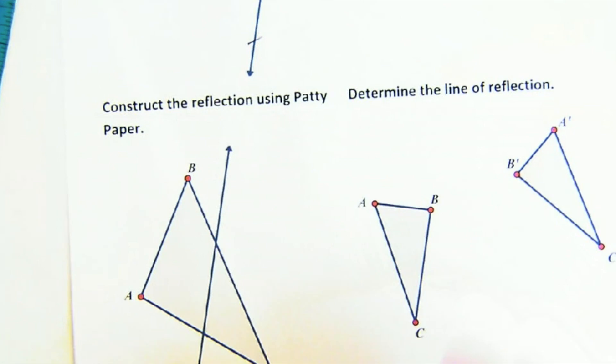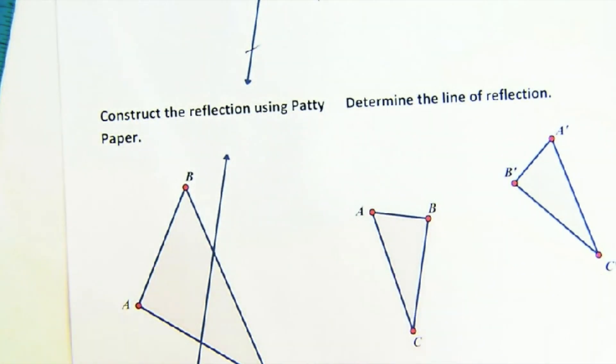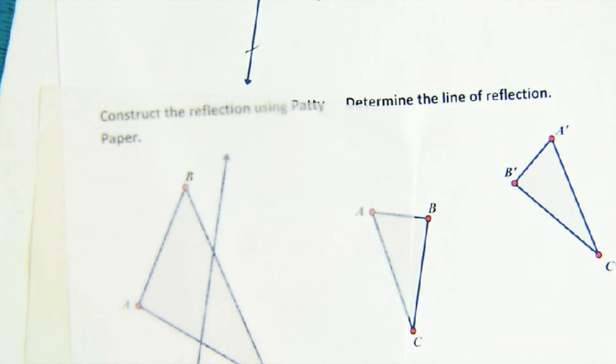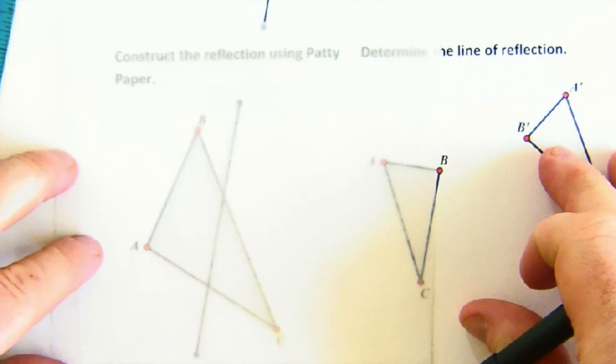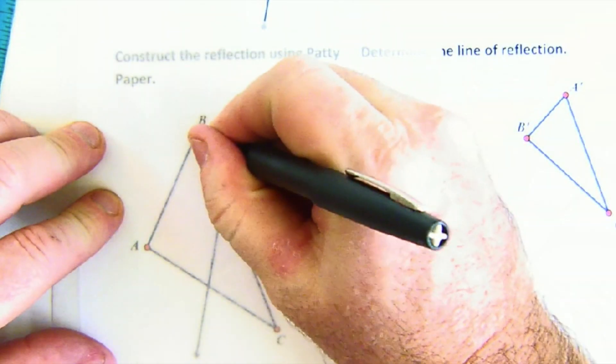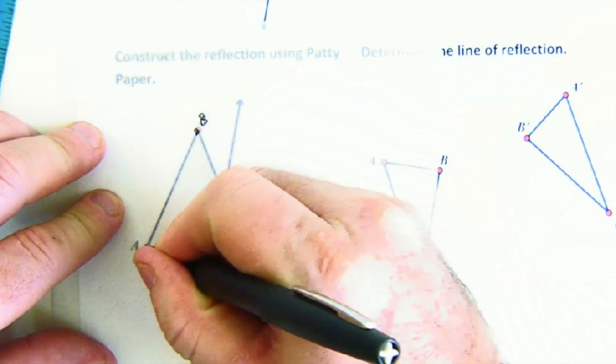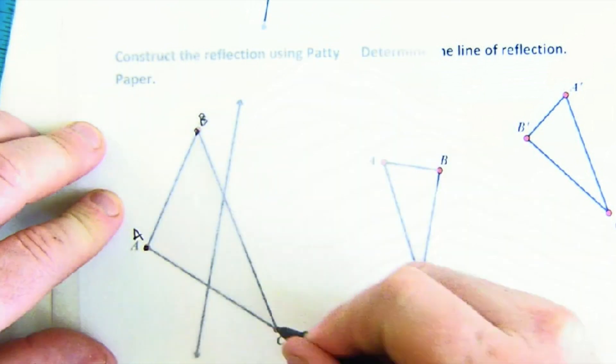Now, this says construct the reflection using a piece of patty paper. Great. They, this time, suggest we use patty paper. I like that. So, what I'm going to do here is to simplify things. I'm going to mark B, A, C.